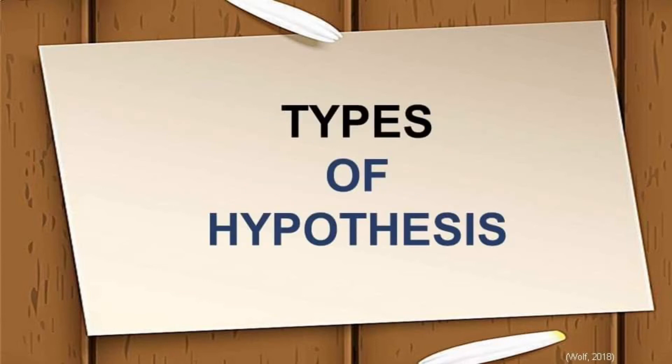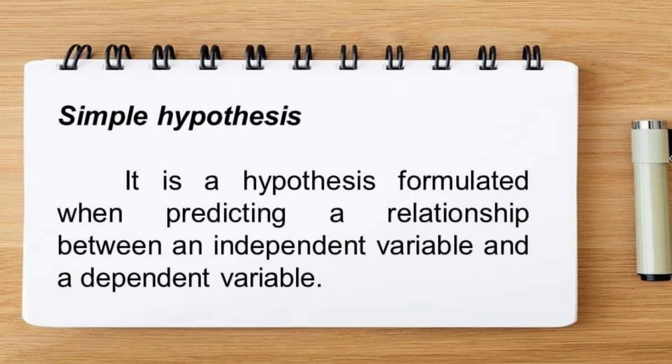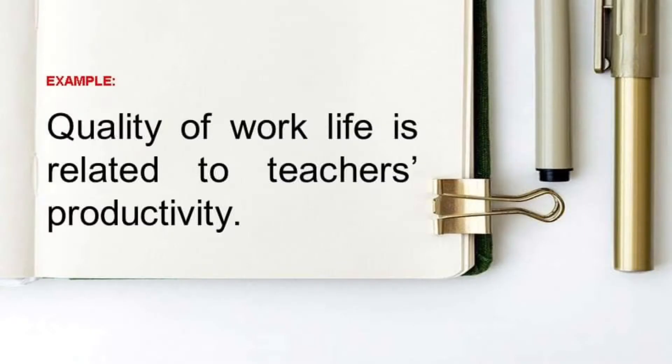Let's look at how to write the study's hypothesis. First, determine the type of hypothesis you will formulate in your research project. A simple hypothesis is formulated when predicting a relationship between an independent variable and a dependent variable. For example: quality of work life is related to teacher's productivity.